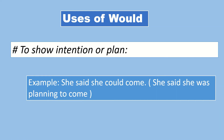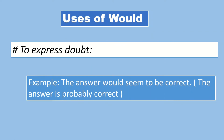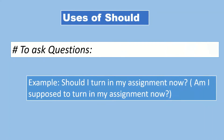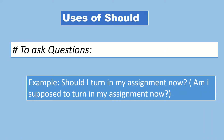Another use of 'would' is to show intention or plan. For example: 'She said she would come.' It means she was planning to come. 'Would' is also used to express doubt. For example: 'The answer would seem to be correct,' meaning the answer is probably correct — the doubt or probability is expressed.